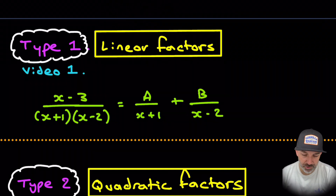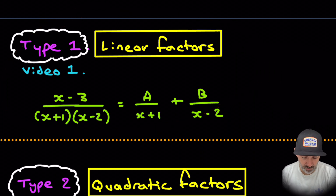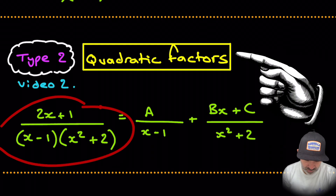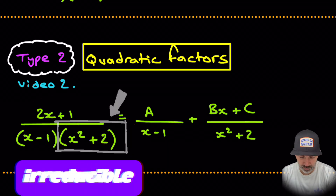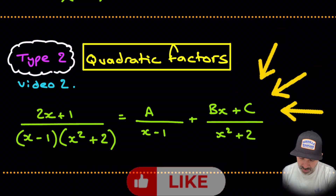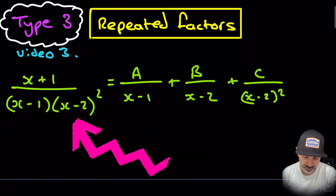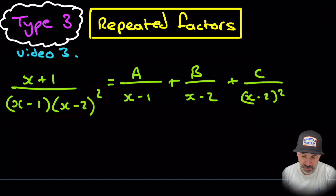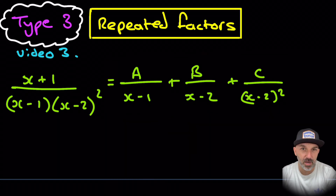As mentioned in the introduction, Type 1 was found in video 1 when we had a linear factor on the denominator, and we used that format. Type 2 was when we had quadratic factors — an irreducible quadratic that we couldn't factor into linear factors, so we used a different form. In this video, we're going to focus on Type 3, which is a repeated factor: the same factor twice, requiring a slightly different format, which the next two examples will demonstrate.